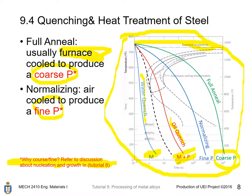You may want to refer to Tutorial 8, but basically for a higher transformation rate — meaning lower temperature — the nucleation rate will be higher but grain growth will be slower. So higher temperature produces coarse pearlite and lower temperature produces fine pearlite. Oil quench produces some martensite and pearlite, while water quench produces 100% martensite.